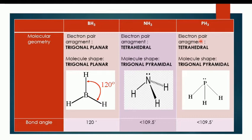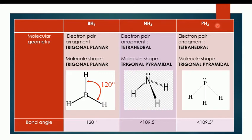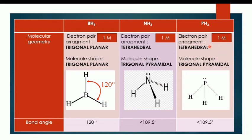For PH3, the electron pair arrangement is also tetrahedral and the molecular shape is trigonal pyramidal. The bond angle is a bonus mark — if you identify the molecular geometry correctly, you get the correct degrees. The bond angle for PH3 (flat) is 120 degrees. For NH3 it is less than 109.5 degrees, and for PH3 it is less than 109 degrees. You will get one mark for each molecular geometry, totalling six marks here.